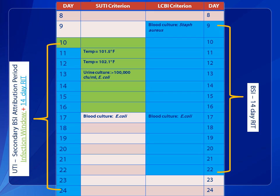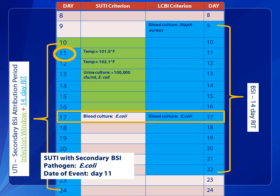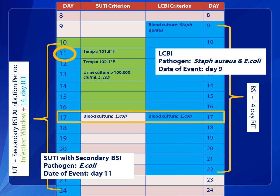Let's look at another scenario. A SUTI is identified with hospital day 11 as the date of event. On hospital day 17, a blood culture is positive for E. coli, matching the SUTI pathogen. In accordance with the secondary BSI guide in Appendix 1, the BSI is determined to be secondary to the SUTI. Note the blood culture collection on hospital day 17 also occurred within the RIT of a primary BSI — the E. coli pathogen is assigned to the LCBI. The result is identification of an LCBI with pathogens Staph aureus and E. coli, and a date of event on hospital day 9.